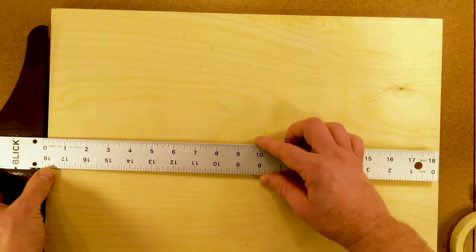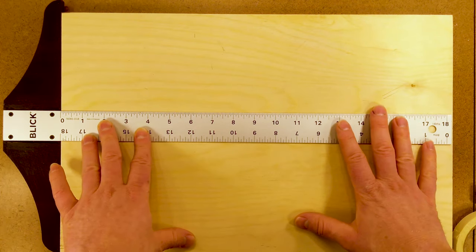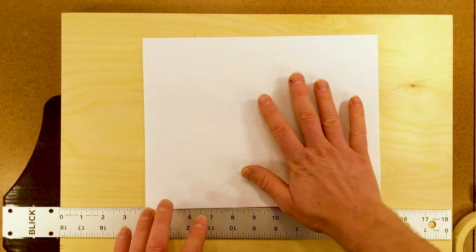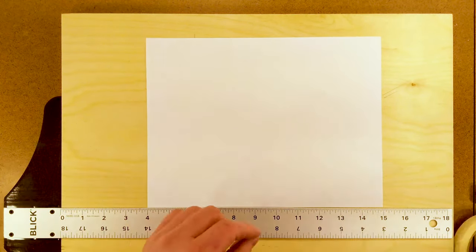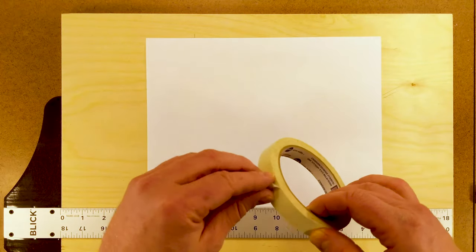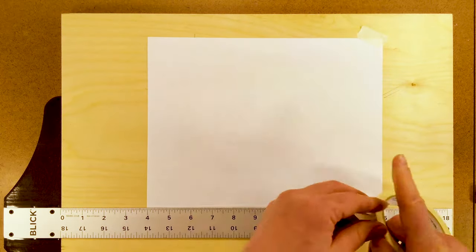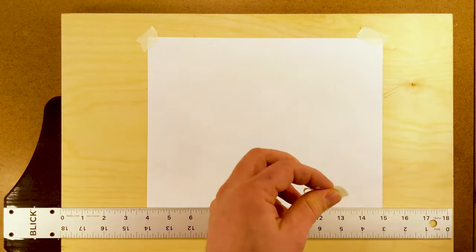The next thing we need is a t-square. We'll put this t-square on the edge of our drawing board or our desk. We can slide it down to the bottom, then take our piece of paper. We'll butt our piece of paper up right along the edge of our t-square. Then we can take some low-tack tape and tape down the corners of our drawing paper.